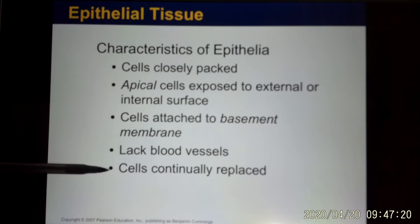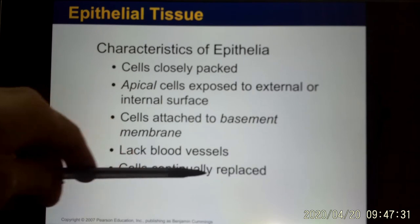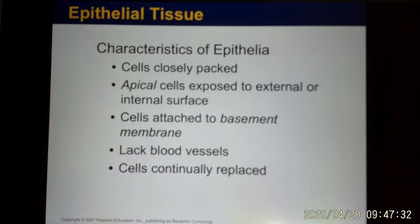Epithelium cells continuously grow and replace. The advantage is that when you damage your skin, they will grow back. But when cells continuously undergo mitosis, the disadvantage is they can have mutations. That's why skin cancer is one of the cancers pretty commonly found in young adults.